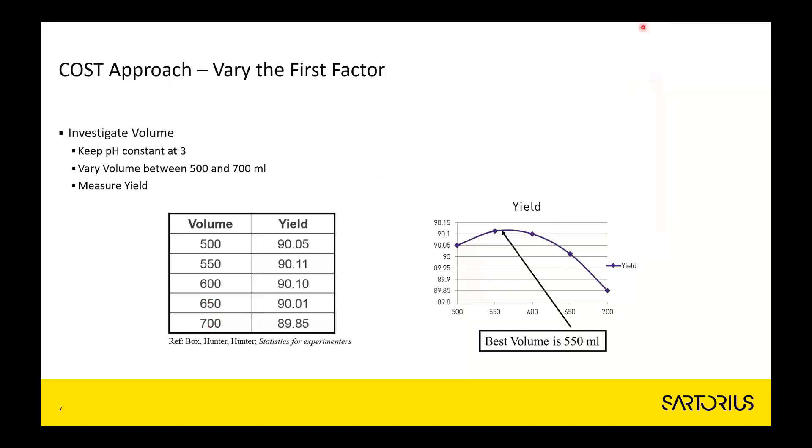In the first stage, the first factor, volume, is changed at five settings between the low value and the high value. For every experiment you register the yield, and then you can do a scatter graph like this one on the right-hand side and quickly find that the best volume seemed to be 550 milliliters.